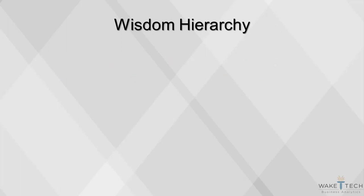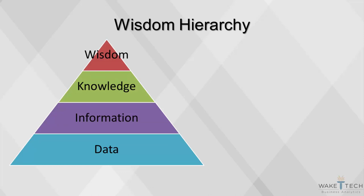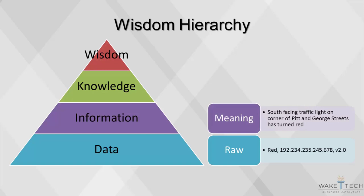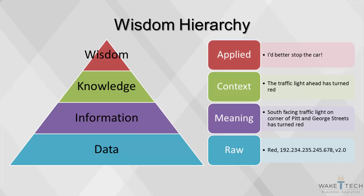A common method of understanding the relationship between data, information, knowledge, and wisdom is by using a pyramid. This graphic is called the DIKW pyramid, or the wisdom hierarchy, and it illustrates that data is the foundation upon which decisions can be made. Information is defined in terms of data, knowledge is defined in terms of information, and wisdom is defined in terms of knowledge. Data are numbers or text without any context. Information provides meaning from data, often combining multiple data points to produce a tangible idea. Knowledge provides context from the information, making it directly applicable to a situation. Wisdom applies the knowledge to make a decision.